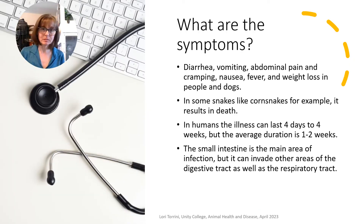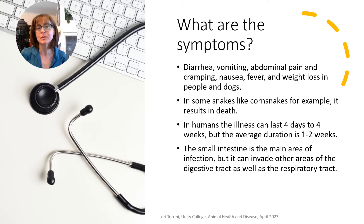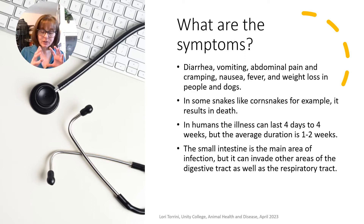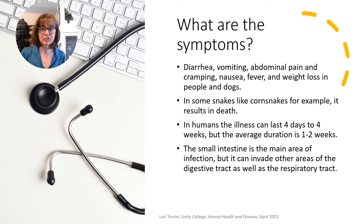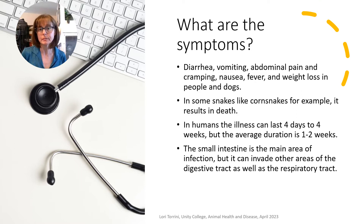What are the symptoms? You'll know if you have it when you're having diarrhea, vomiting, abdominal pain and cramping, nausea, maybe a fever, and you start losing weight. This is a list of common symptoms in people and dogs. In some snakes, like corn snakes for example, it actually results in death — it impacts them very quickly and very severely, and there's really no time to even try to treat it.